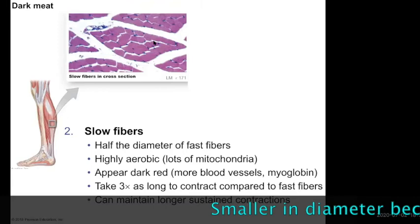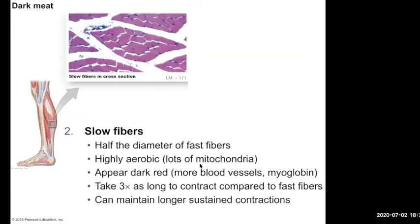Slow fibers, on the other hand, are the small ones within any given muscle tissue. They are highly aerobic — they have lots of mitochondria. This is basically your dark meat. You have a lot of blood vessels, a lot of myoglobin to make it red, and a lot of mitochondria because they're highly aerobic. They contract at a very slow rate, but they can last a lot longer. White meat versus dark meat is the easiest way to think of it.